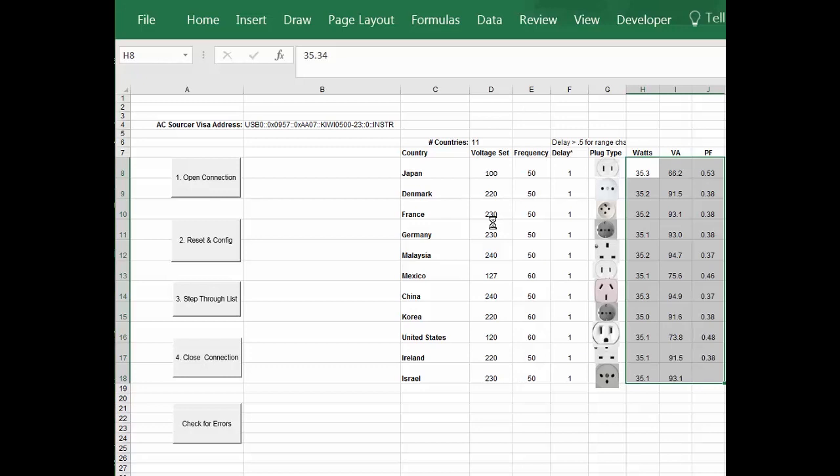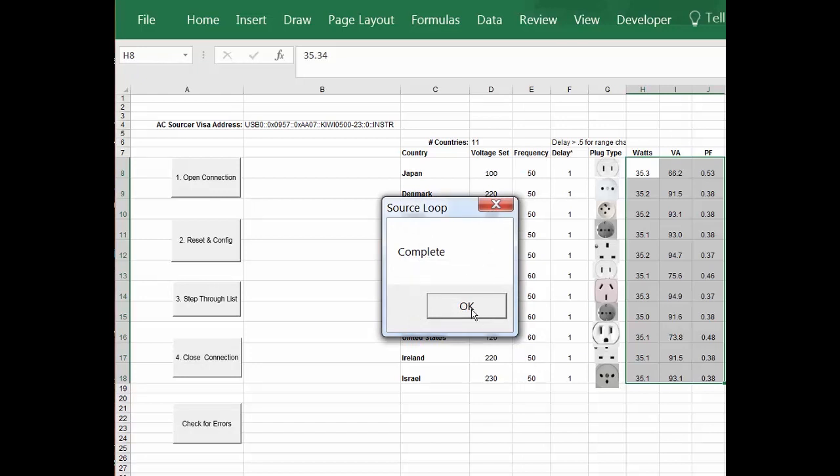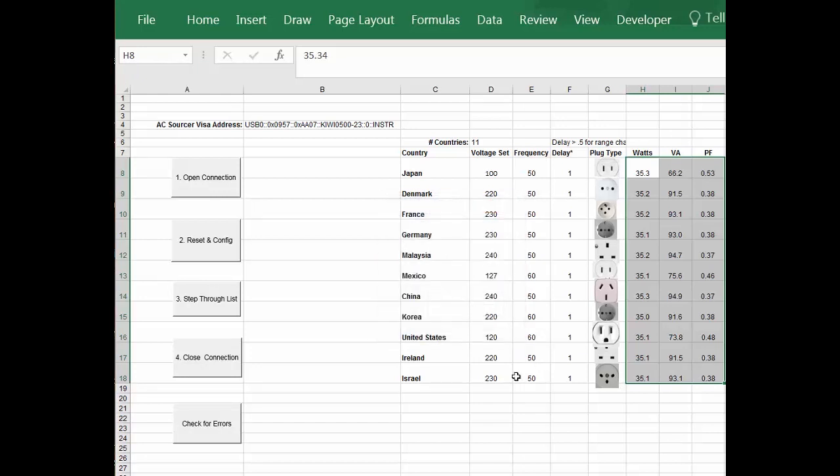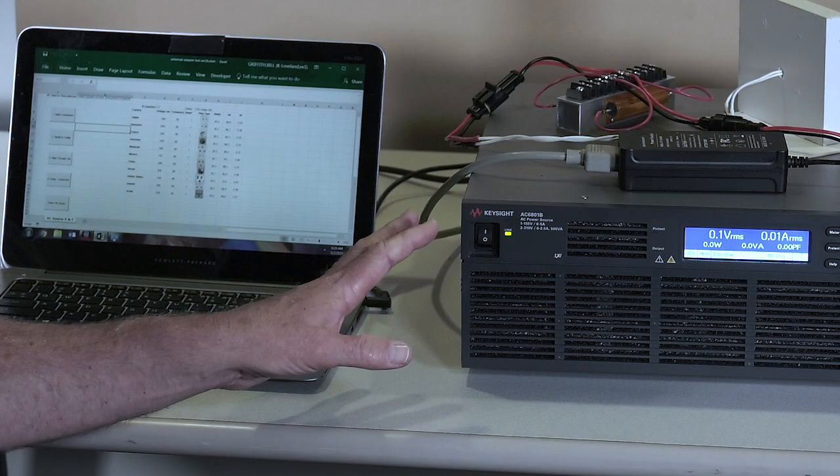This is an example program. You can change it—you could add current measurements. The product also does DC, so you could add AC and DC measurements if you chose to. There's a lot of flexibility in what you want to measure, but this is just an example.